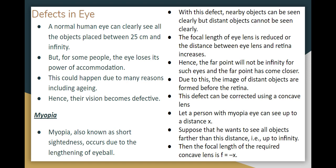We can see objects from 25 centimeters onwards. One reason for defects is aging — from mid-40s, defects appear in the eye. These are called defective vision. Defects can also appear at school age.